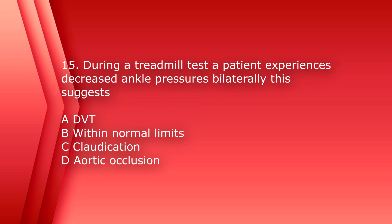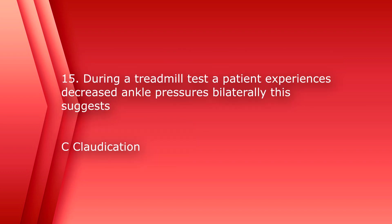Number 15. During a treadmill test, a patient experiences decreased ankle pressures bilaterally. This suggests A, deep vein thrombosis, B, within normal limits, C, claudication, or D, aortic occlusion. The answer is C, claudication. Claudication is defined as a cramp-like pain in the leg that is induced by exercise, usually due to arterial obstruction.